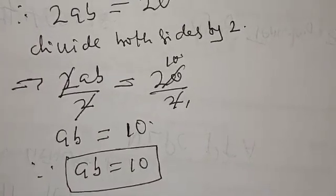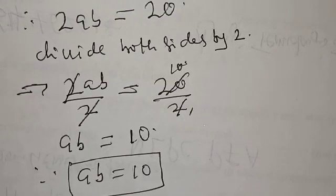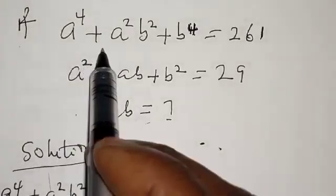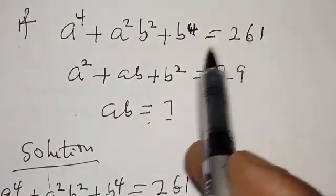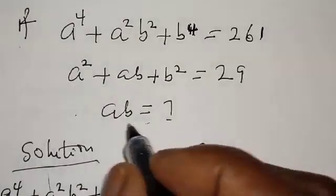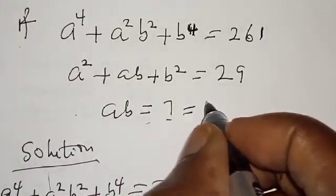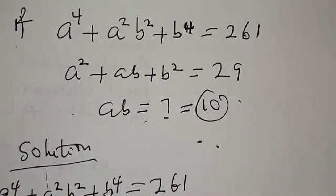If you've enjoyed the class please don't forget to like, share, comment and subscribe. The question asked us to find the value of ab given a raised to power 4 plus a squared b squared plus b raised to power 4 equal to 261, and a squared plus ab plus b squared equal to 29. And ab is now equal to 10. Thank you. If you have any suitable method you may also put it in the comment section.